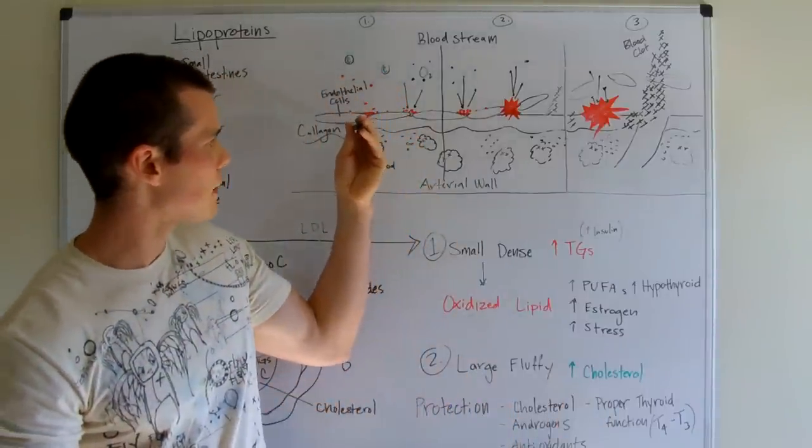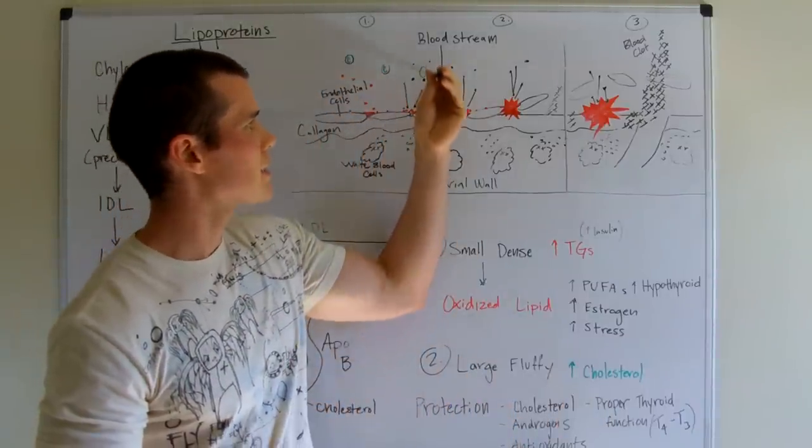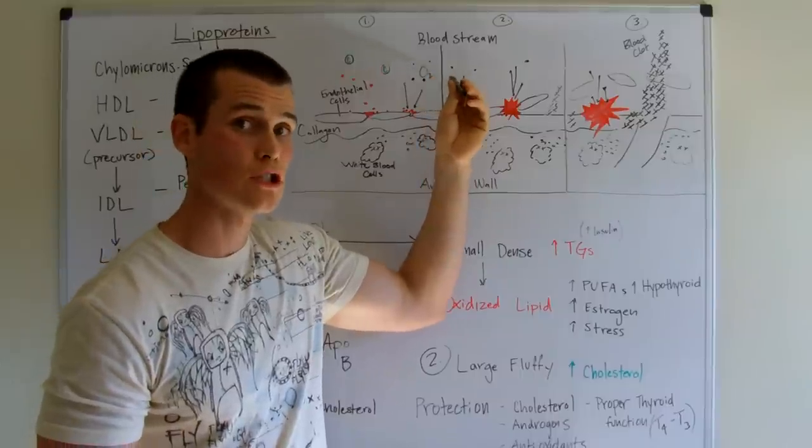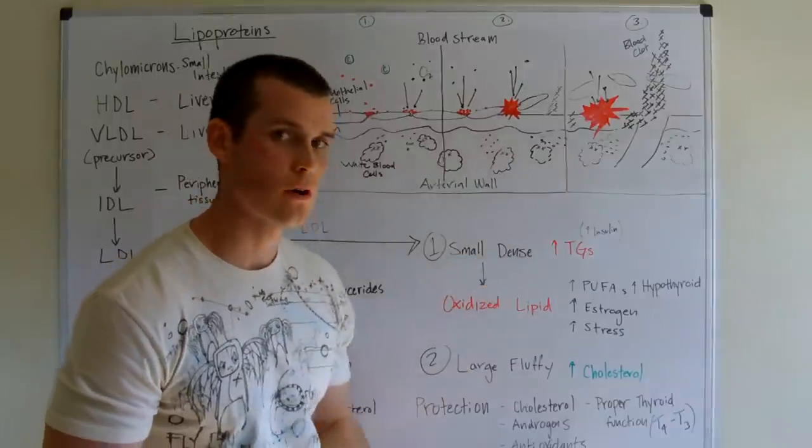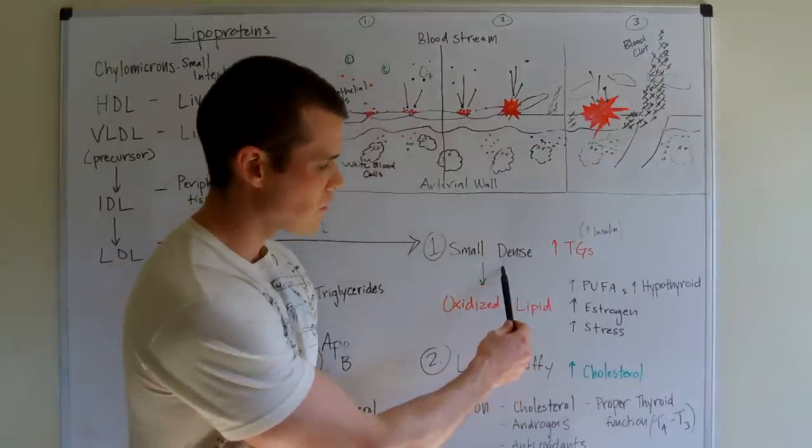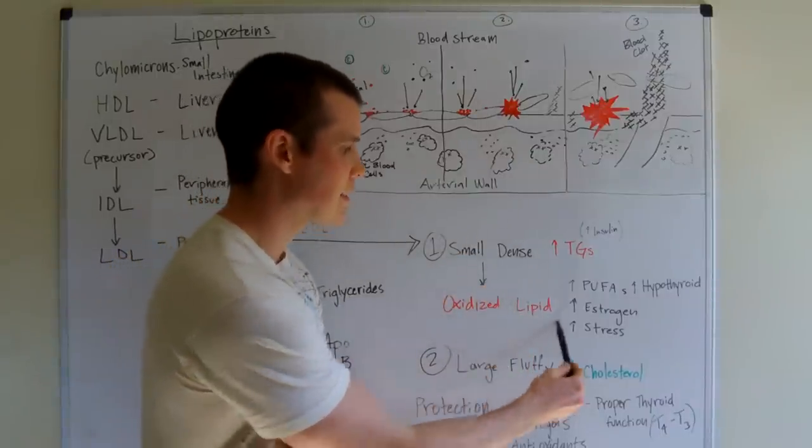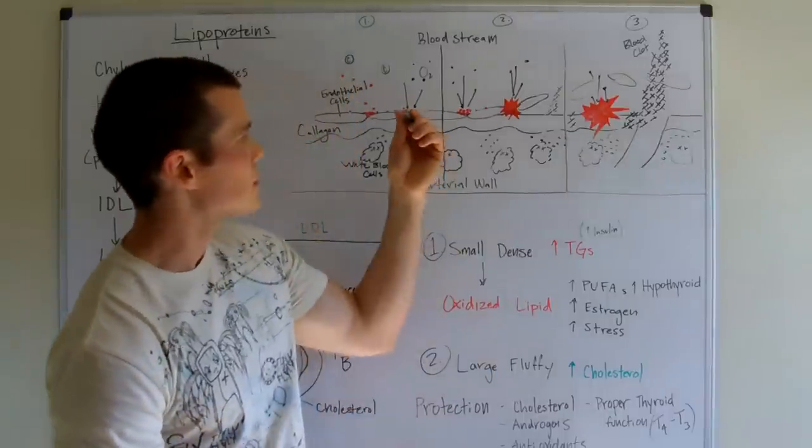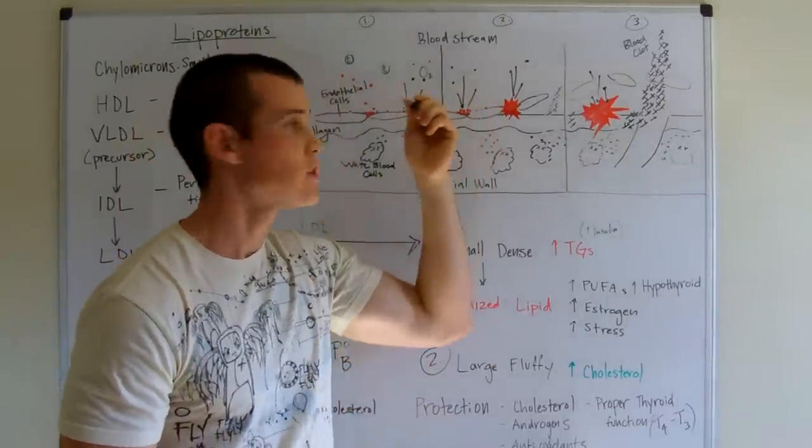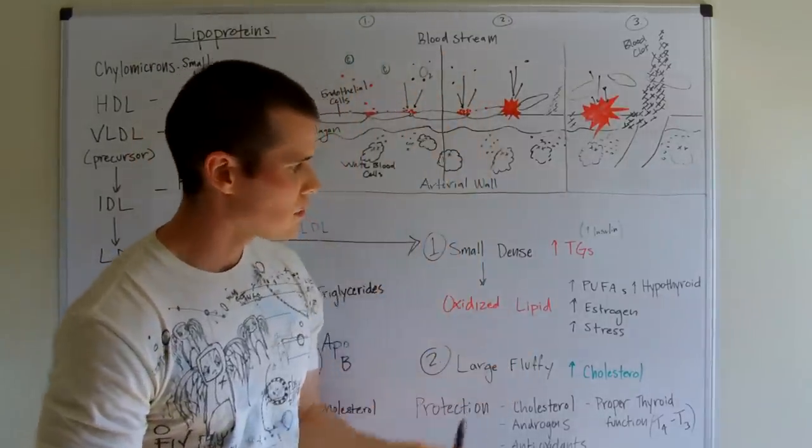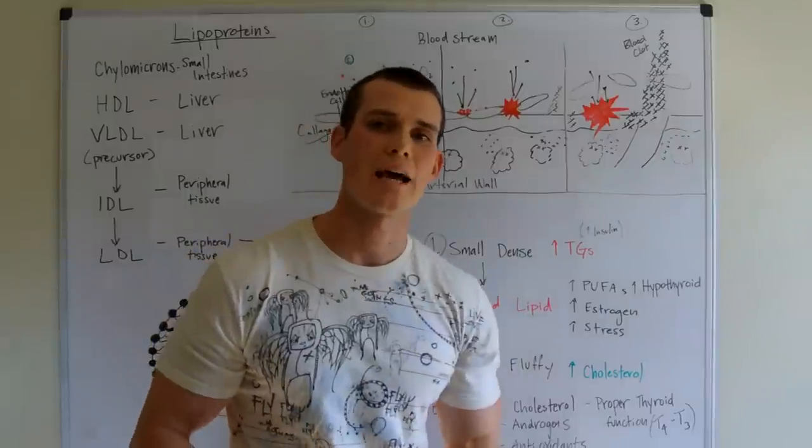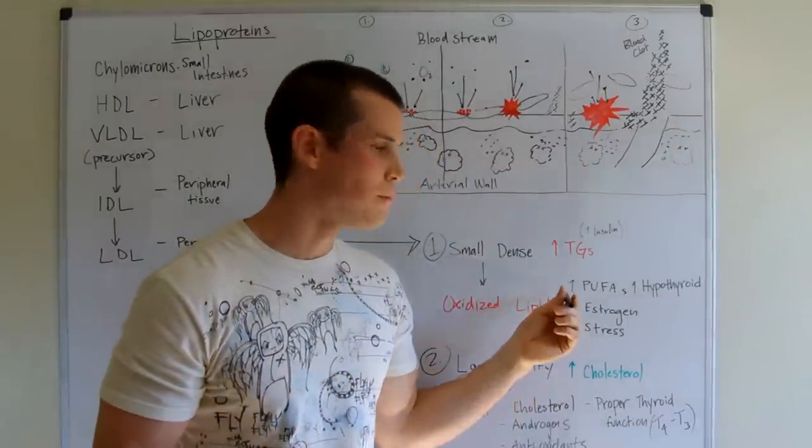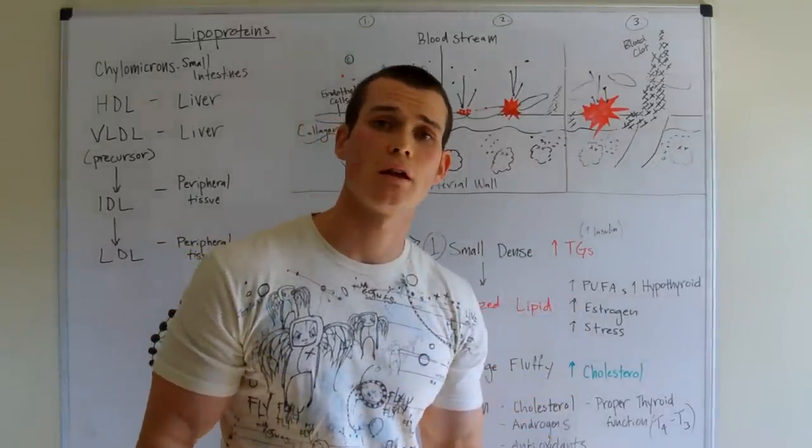From there, the next step that happens is the oxygen up here starts to react with these small dense particles. So what's happening is these small dense particles become oxidized lipids. So you get this free radical damage happening up here. Free radicals and oxidation is actually accelerated when we have more polyunsaturated fats within the diet.